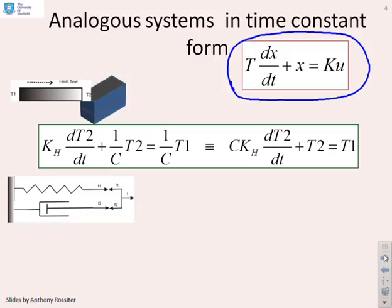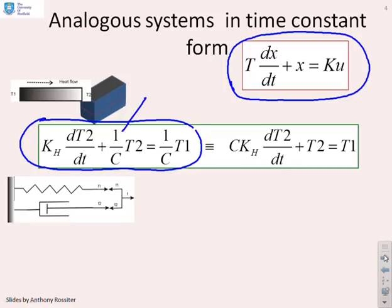First, taking the heating system, where we had a heat flow going into some form of block — this is the equation we have. What we're going to do is make the coefficient that multiplies on the state equal to 1. In order to do that, we need to multiply the whole equation throughout by capital C. Then you'll get: C·kh·dT2/dt plus T2 equals T1, where you'll see the coefficient is 1.